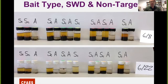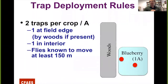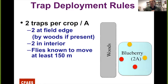Moving on to trap deployment: our basic rule of thumb is two traps per crop per acre. We want to place one trap at the edge of the field by a woods if present, and then one more toward the interior. From recent studies, we know spotted wing adults can move at least 150 meters. So in this example on the right, you see a one-acre blueberry field with one trap toward the edge and one trap toward the interior. If you expand that to a two-acre blueberry field, you'd have two traps at the perimeter and two traps in the interior.